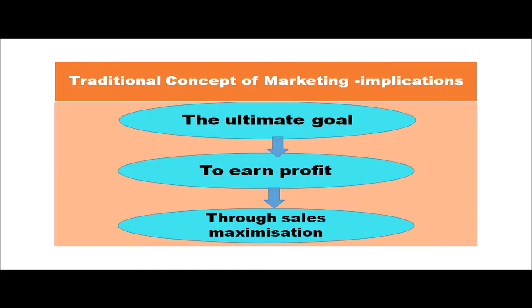Sales promotion activities include discount, rebate, scratch card, coupons, and product combination. Using all these things, we boost the sales. The traditional concept also has one more implication: the ultimate goal is to earn profit through sales maximization. The focus is on sales — we have already produced, and to get more and more profit, we concentrate on maximizing the sales.